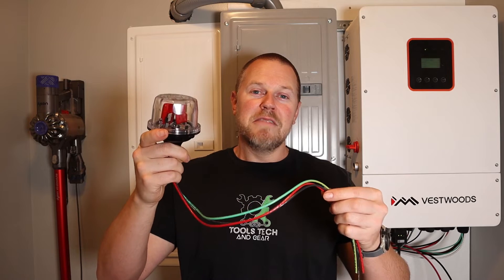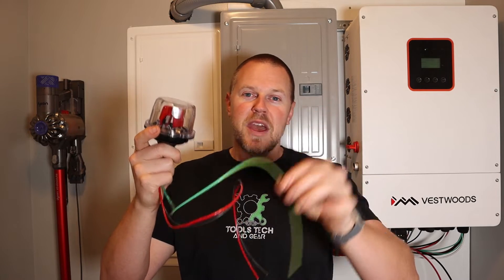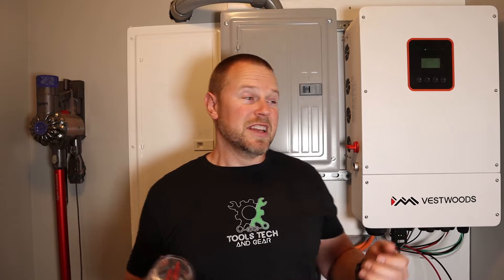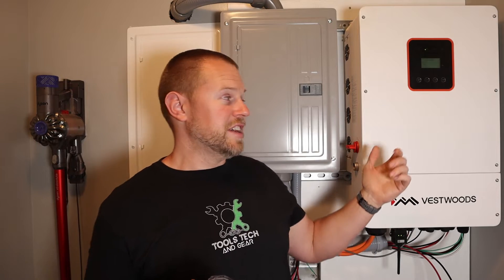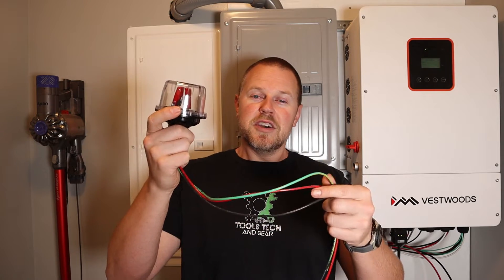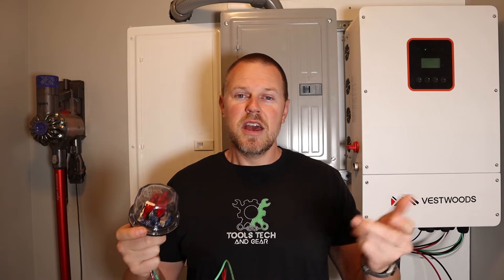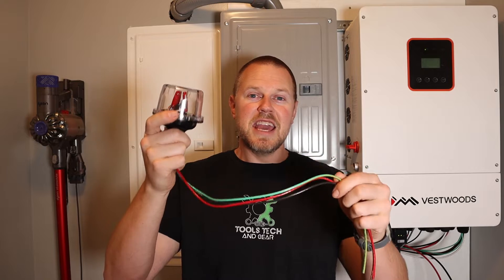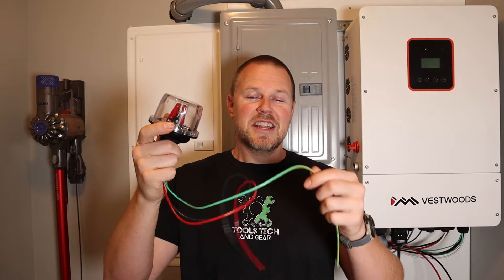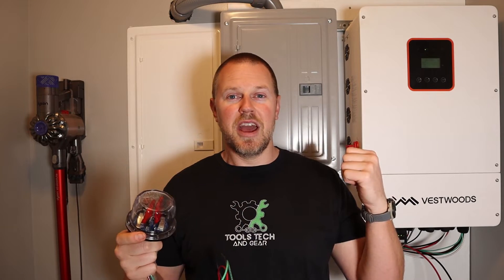This will clamp down high voltage and send it to ground. Let's say you have a power surge or a lightning strike and it would damage your expensive equipment such as this inverter charge controller. You install one of these onto your hydro, solar, or wind, and it will basically take that high voltage and send it down to ground and protect your expensive equipment.